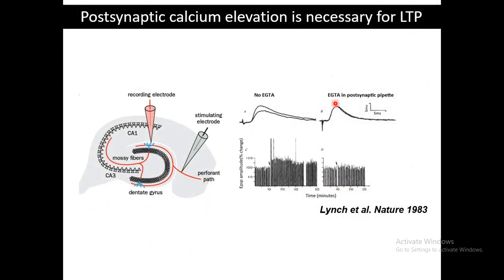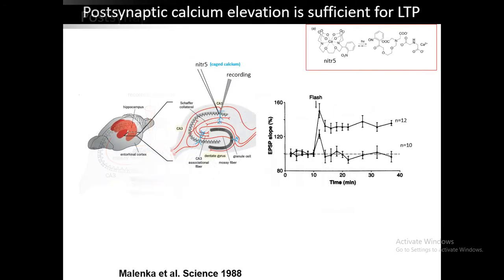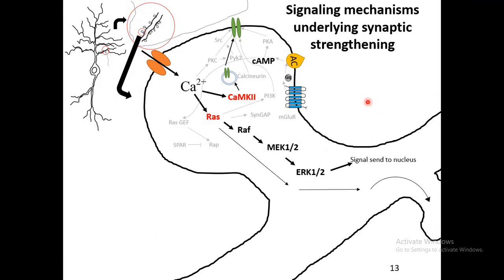The question is: what is the implication of calcium increase at the post-synaptic level? People found that calcium increase is important for synaptic strength alteration. After high-frequency stimulation, a change in synaptic strength was observed, but when calcium was chelated, that change was gone — suggesting calcium is necessary. Also, uncaging calcium at the post-synaptic level, which drastically increases calcium concentration there, would change synaptic efficacy — suggesting calcium is also sufficient for long-term potentiation.